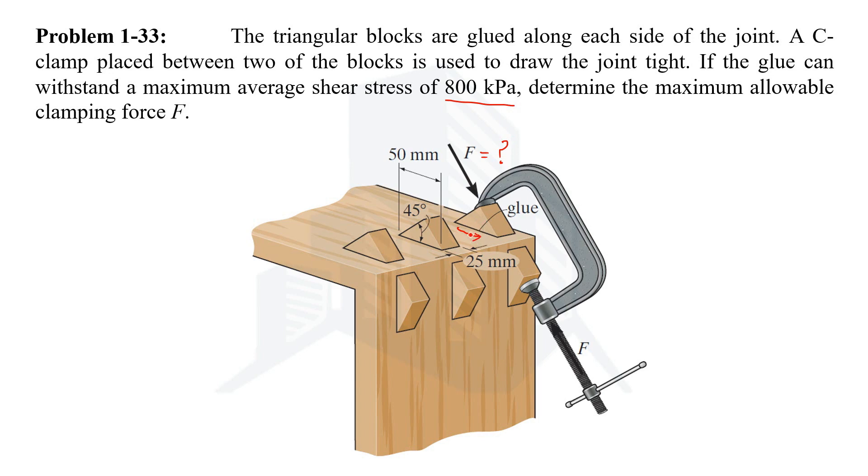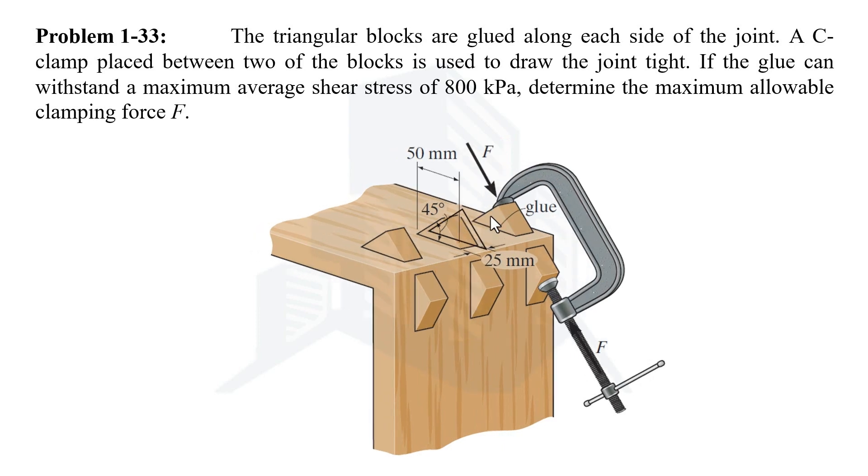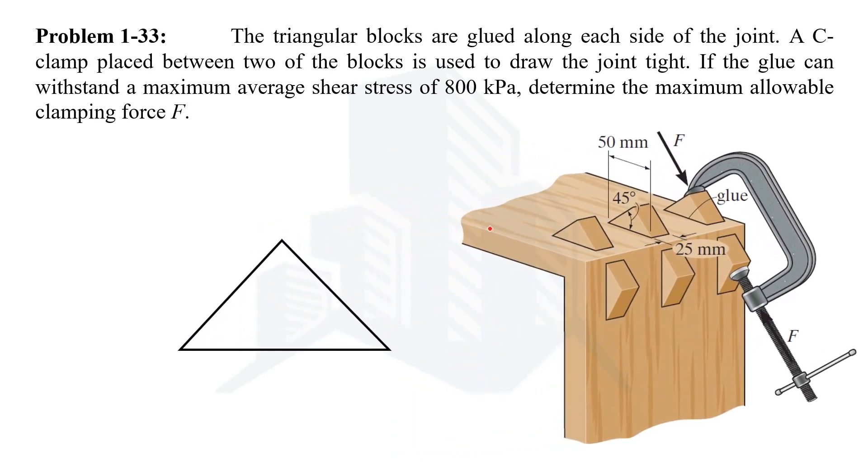So in order to have the parallel force we need to consider this triangular block, and over that triangular block a force with the help of this C-clamp is being applied that is actually required. So let's draw the free body diagram of this triangular block where the force F is acting. So this magnitude should be determined. The C-clamp is placed in such a way that this angle would be perpendicular.